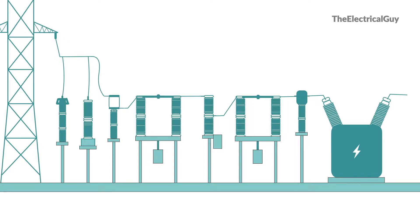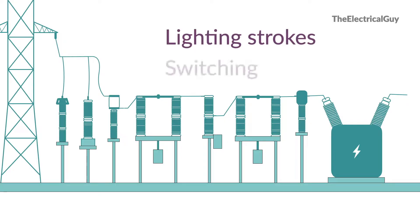Power systems may be subject to overvoltage caused by either lightning strokes or switching. If this overvoltage is not minimized, it may damage the system. That is when a surge or lightning arrestor comes into the picture.